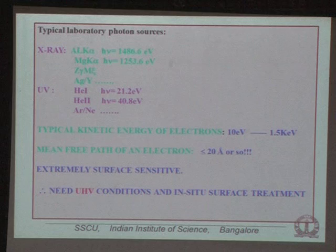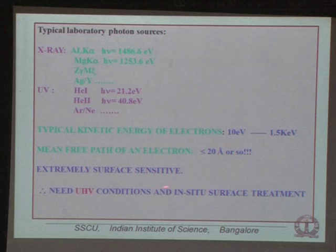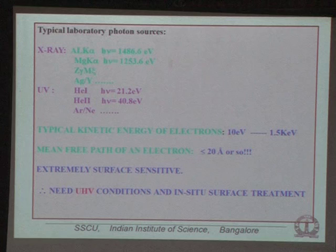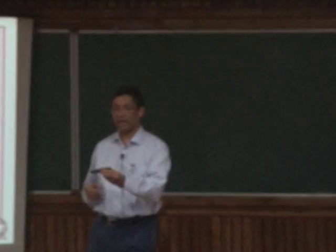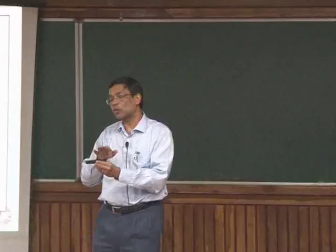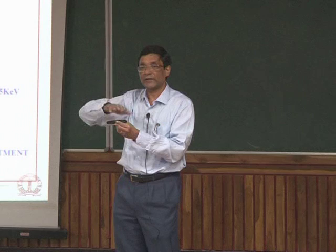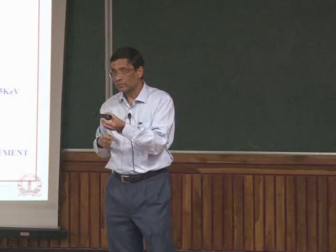The mean free path is less than 20 Ångströms, making the technique extremely surface sensitive. This means we need ultra-high vacuum conditions and in-situ surface preparation. Because we are looking at only the first layer of the material — if I want to study copper, I need to ensure I'm actually seeing copper, not an oxide layer.